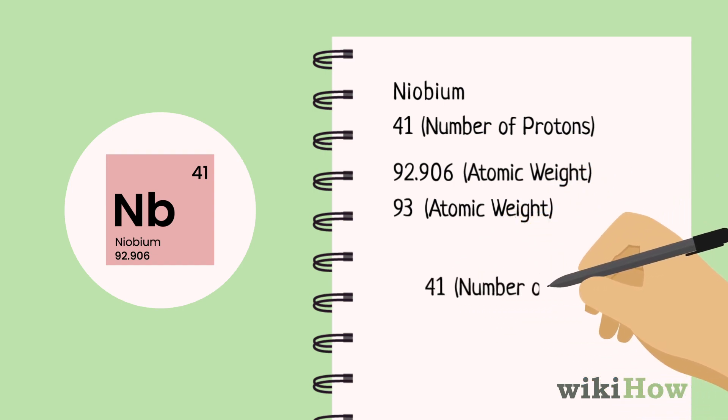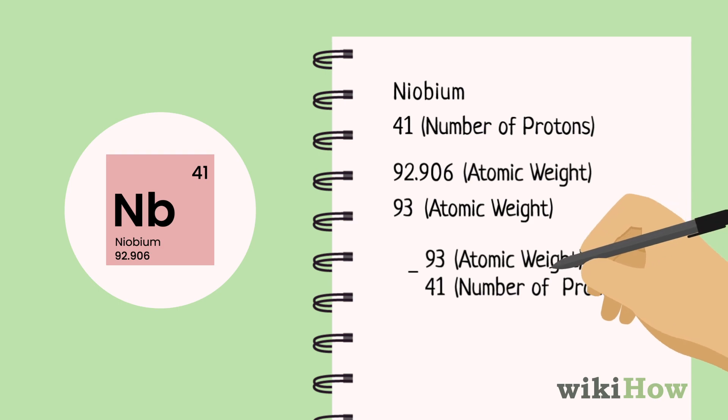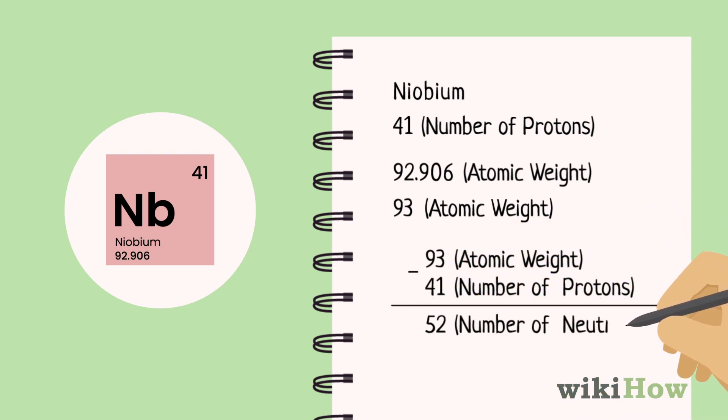Finally, subtract the number of protons from the rounded up atomic weight to find the number of neutrons in the atom. In the case of niobium, 93 minus 41 is 52, which means that a niobium atom has 52 neutrons.